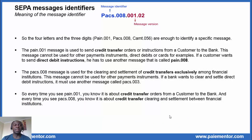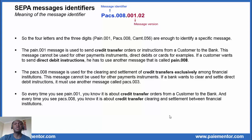The four letters and the three digits are enough to identify a specific message. The PACS 8 message is used to send credit transfer orders or instructions from a customer to a bank. This message cannot be used for other payment instruments — direct debits or cards, for example. If a customer wants to send direct debit instructions, he has to use another message called PACS 3. The PACS 8 message is used for the clearing and settlement of credit transfers exclusively, among financial institutions. If a bank wants to clear and settle direct debit instructions, it must use another message type called PACS 3.